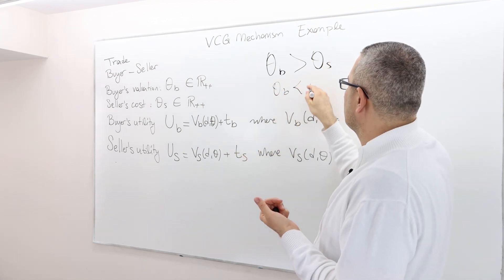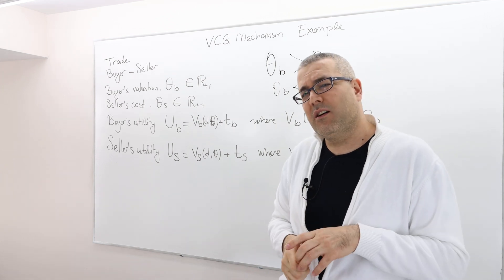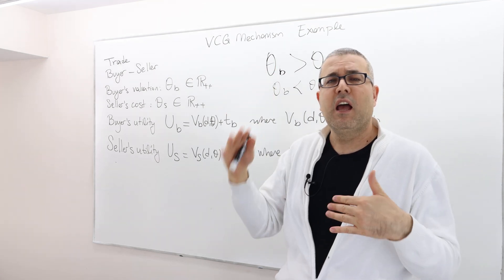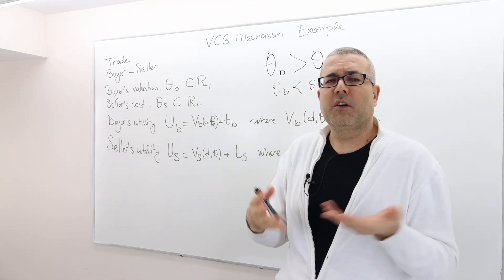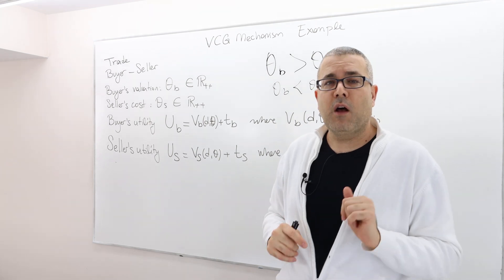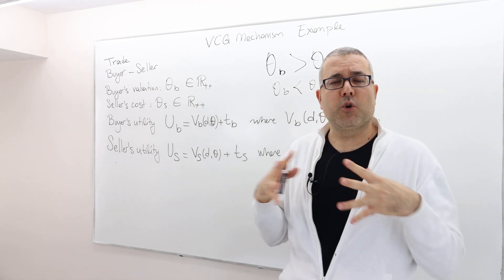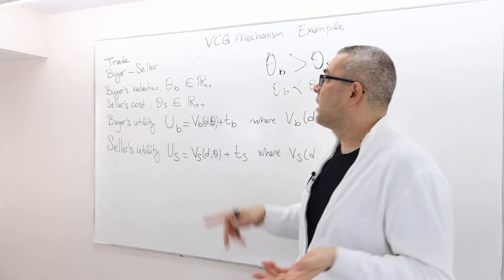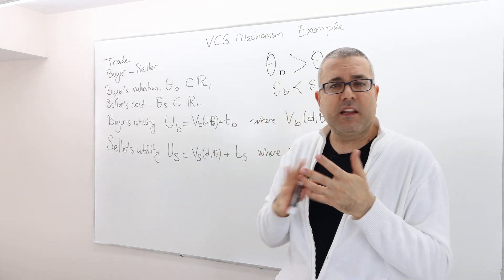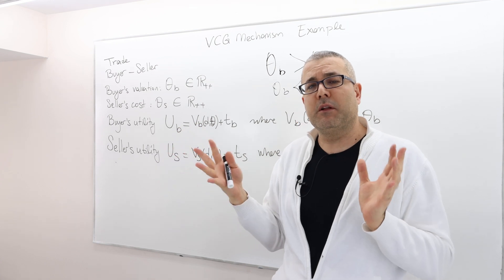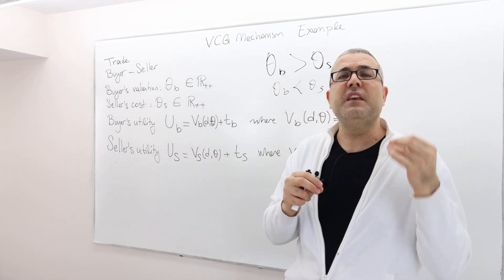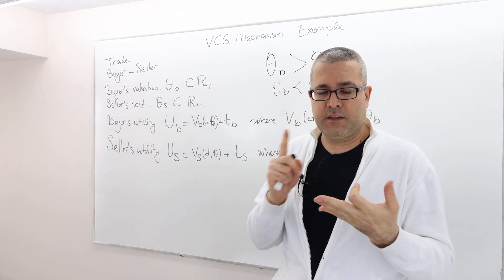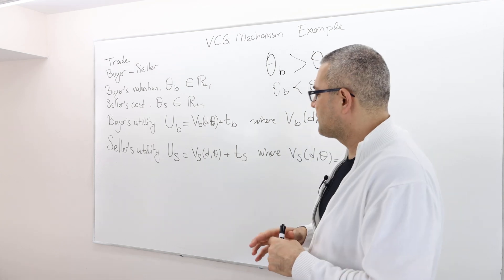If the buyer's declared valuation is much less than the seller's cost, the mechanism designer says no trade. Note that the mechanism doesn't have to work this way — there are infinitely many possible mechanisms. So the question is: what is the VCG mechanism? We know that VCG is strategy-proof. We're also going to check whether the VCG is efficient and whether it satisfies individual rationality.